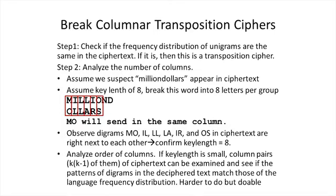Step two: analyze the number of columns. Assume that based on context about the sender and receiver, we suspect the phrase 'a million dollars' could appear in these transmissions. Assuming a key length of 8, we break this phrase into groups of 8 letters per row, giving M-I-L-L-I-O-N-D in the first row, followed by O-L-L-A-R-S in the second row.